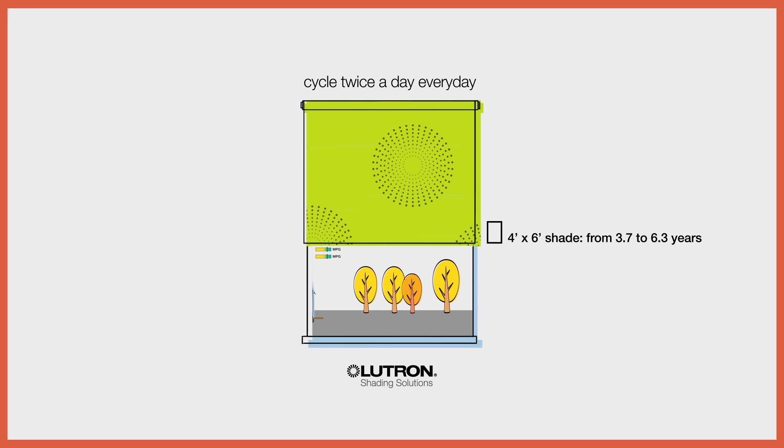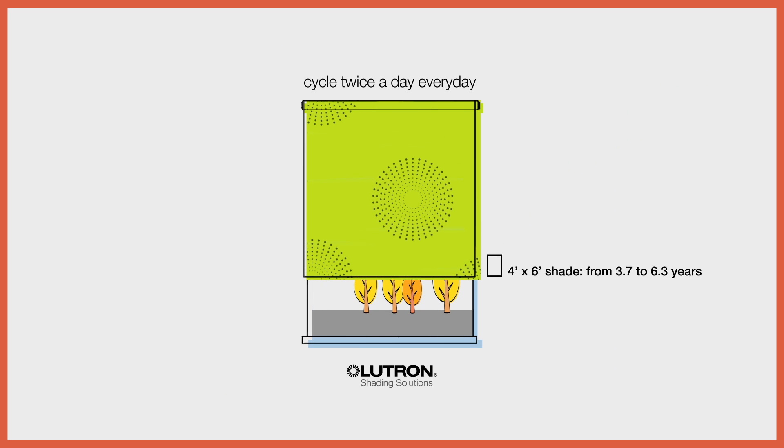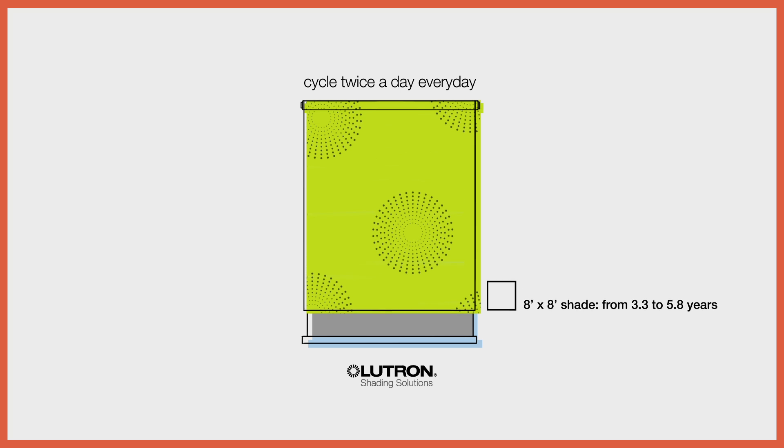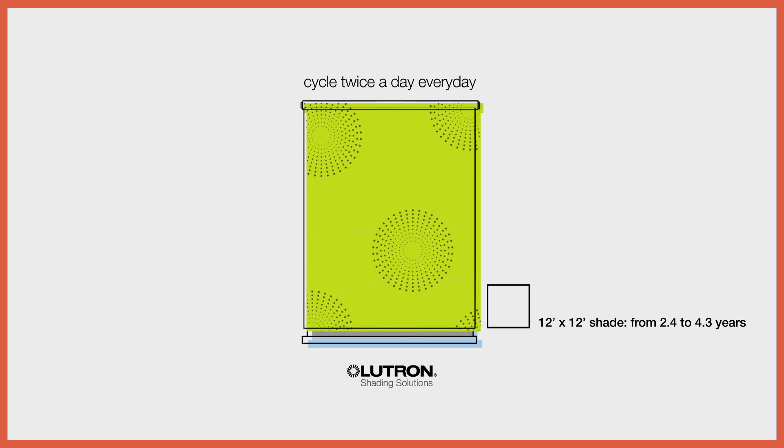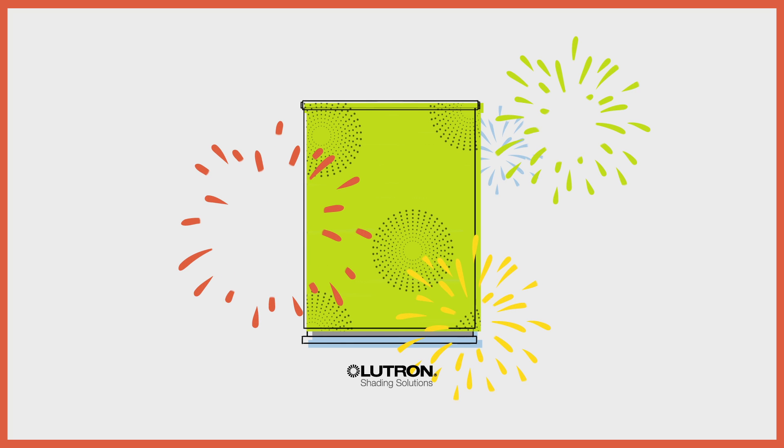What does this mean for your shade battery life? Expected battery life of shades that are 12 feet by 12 feet and cycle twice a day every day will increase to over four years. Now that's magic.